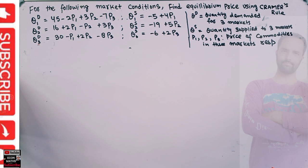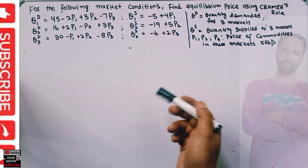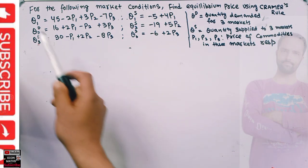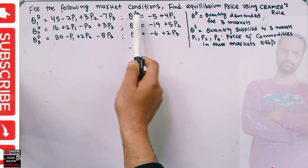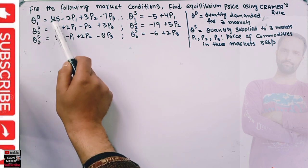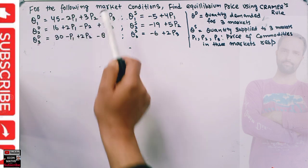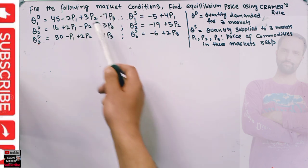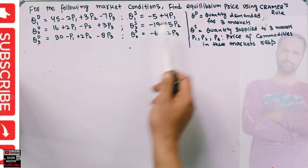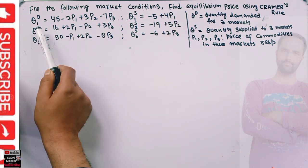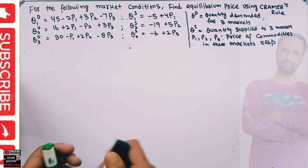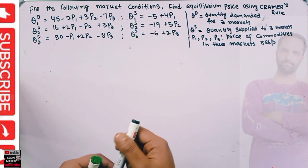In this video we will solve a problem on finding the equilibrium price using Cramer's Rule in three markets. For the following market conditions, find equilibrium price using Cramer's Rule. We have three markets and their quantity demanded and quantity supplied are given. Q1d denotes the quantity demanded in the first market.